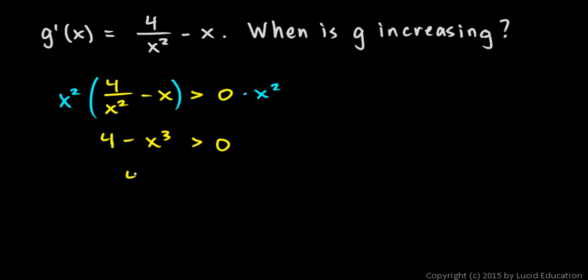Then add x³ to each side and you get 4 > x³. Take the cube root of each side and you get the cube root of 4 is greater than x, or flipping that around, x < ∛4.